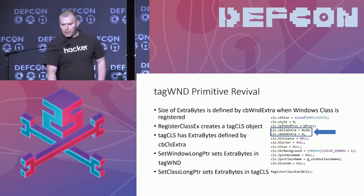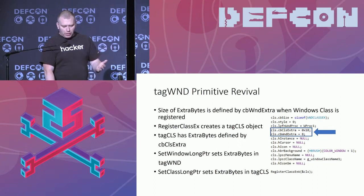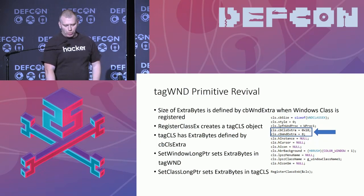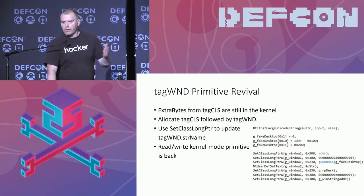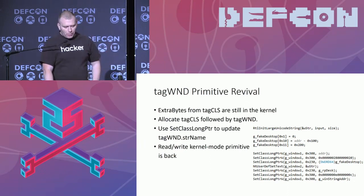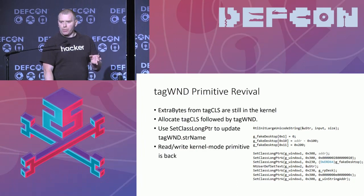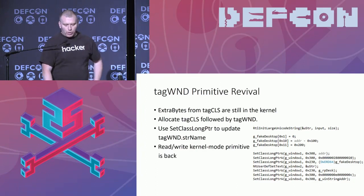There was a different problem though — even though we knew the address and overwrote the size of extra bytes, we couldn't use it anymore because we're writing to user mode memory. Looking at how that works, we find that the size of extra bytes is defined when we register the window class. But when we register the window class, we also set a parameter for an object called tagCLS, which also has extra bytes, and it also has an API to set these extra bytes. It's not the same — this one is called SetClassLongPtr. And lo and behold, even though Microsoft tried to mitigate it, they only changed one of the APIs — they didn't change the second one. So the extra bytes from a tagCLS object are still placed in the kernel, which means we can allocate a tagCLS object before the window object, use the extra bytes from the tagCLS object to write the string pointer of the window object, and this way we have our read-write primitive back again.